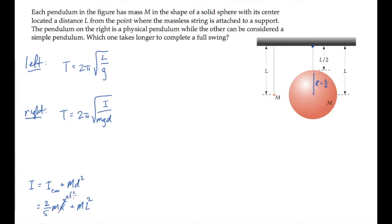If we replace the radius r with l over 2 and simplify, we find that the moment of inertia about the attachment point is 11 tenths mL squared.